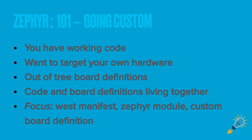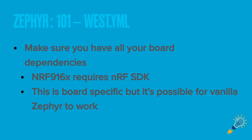So you have some working code, maybe you're using a development kit or another board you can buy off the shelf, and you want to move this project to the next stage and target your own hardware. You want to create some out-of-tree board definitions that can live with your application. The code and board definitions can live together thanks to how Zephyr is organized, and we're going to focus on modifying the most important things to allow your code to coexist with an out-of-tree board definition.